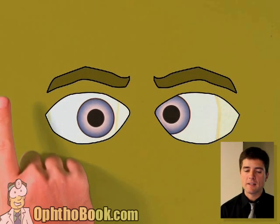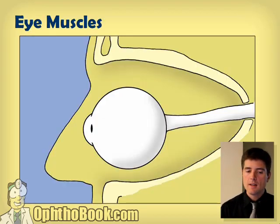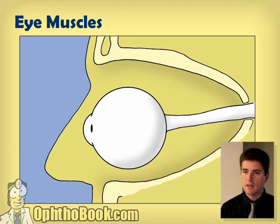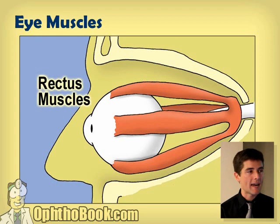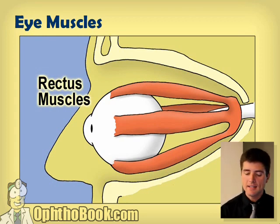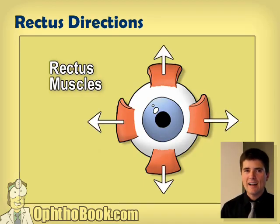We need to talk about the cardinal directions. The eye sits inside the eye socket like a scoop of ice cream inside a waffle cone. There are rectus muscles — for up, down, left, and right — which attach to the surface of the eyeball and go all the way back to the annulus of Zinn. At a very simplistic level these rectus muscles affect eye direction up, down, left, and right.